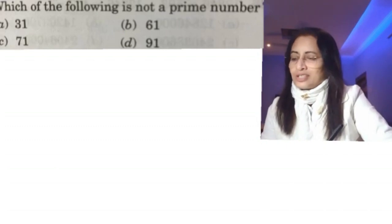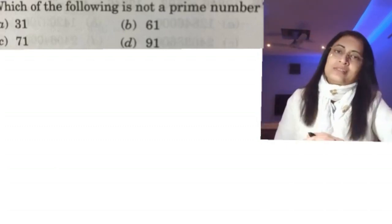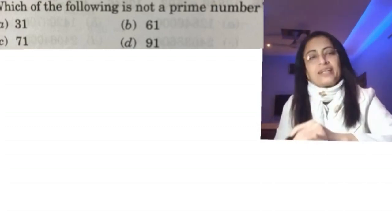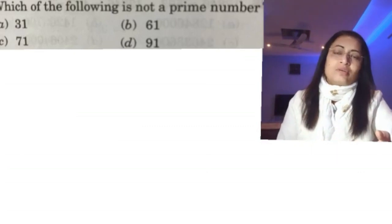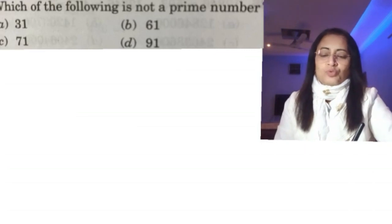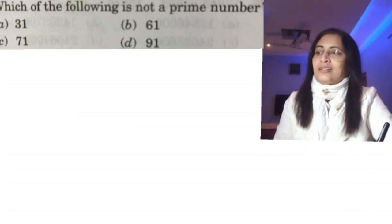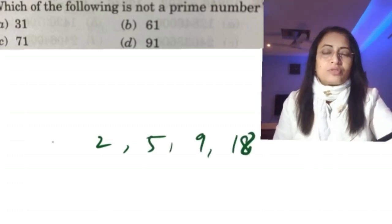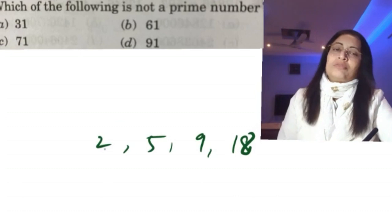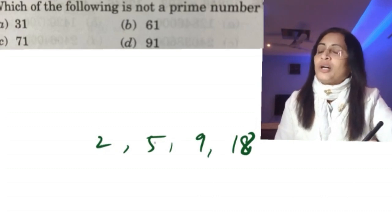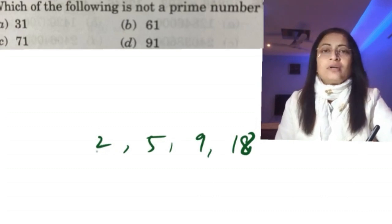A prime number is one that cannot be divided by any number except 1 and itself. For example, numbers like 2, 5 — you cannot divide them by any other number. But numbers like 9 and 18 can be divided by other numbers, so they are not prime.